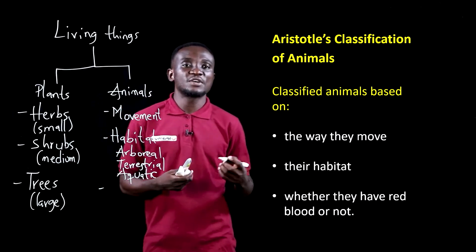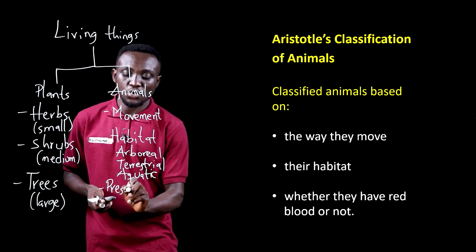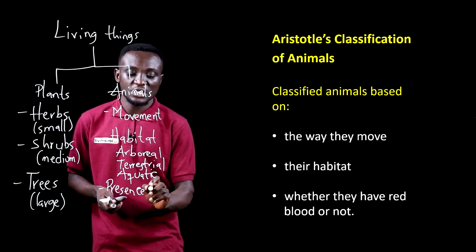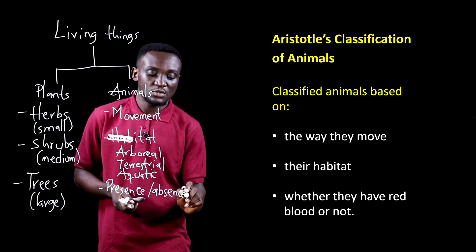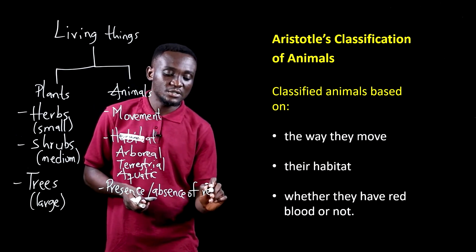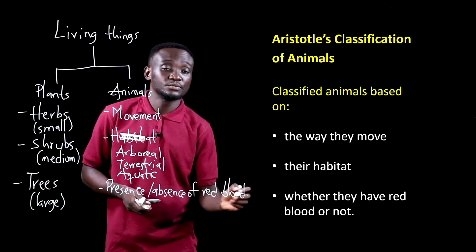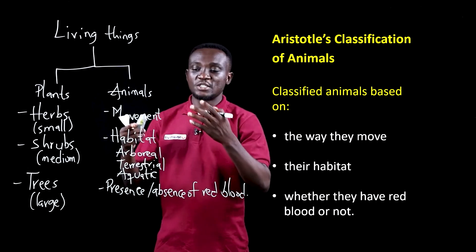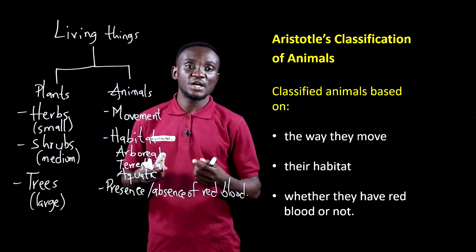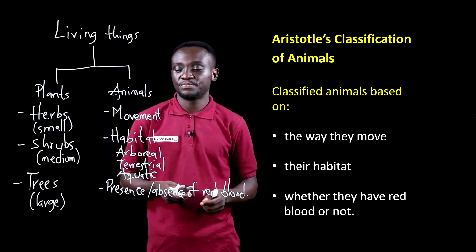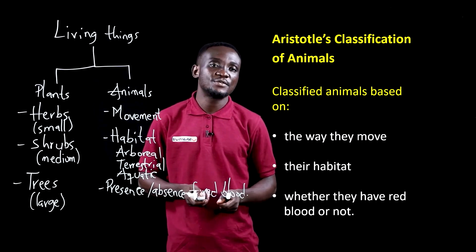Finally, he classified organisms by whether they had red blood or not — the presence or absence of red blood. These were the main criteria he used in classifying animals: their movement, their habitat, and the presence or absence of red blood.